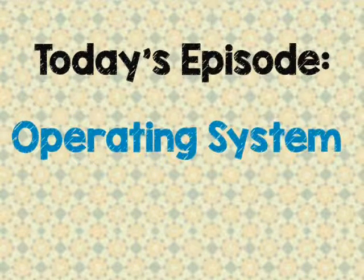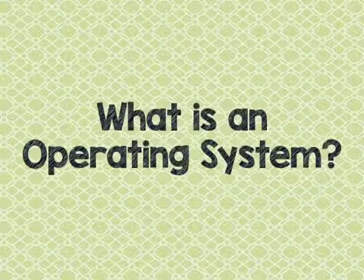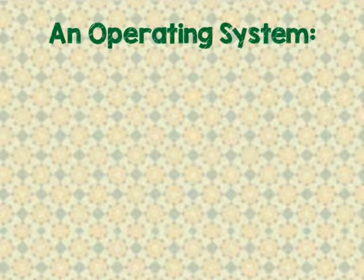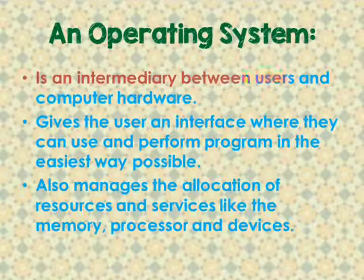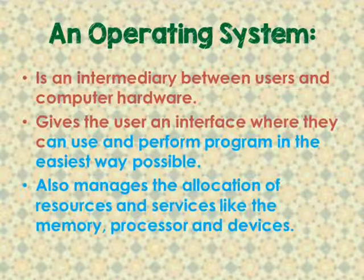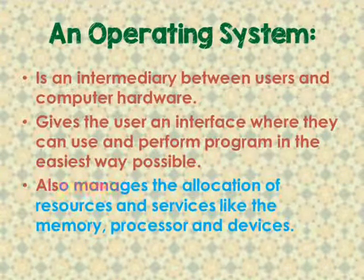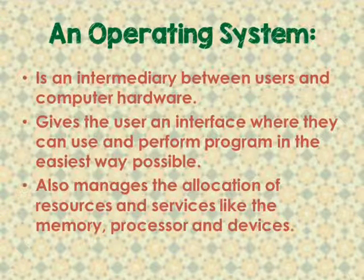Today's episode: Operating System. An operating system is an intermediary between users and computer hardware. It also gives the user an interface where they can use and perform programs in the easiest way possible. An operating system also manages the allocation of resources and services like the memory, processor, and devices.